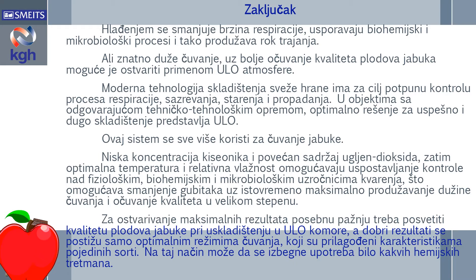Moderna tehnologija skladištenja sveže hrane ima za cilj potpunu kontrolu procesa respiracije, zatim sazrevanja, pa starenja i propadanja. U objektima sa odgovarajućom tehnološkom opremom, optimalno rešenje za uspešno i dugo skladištenje predstavlja upravo Ultra Low Oxygen atmosfera. Ovaj sistem sve više se koristi za čuvanje jabuke, naročito kada je ambicija duže čuvanje i izvoz. Niska koncentracija kiseonika i povećan sadržaj ugljen-dioksida, uz optimalnu temperaturu i relativnu vlažnost, omogućava uspostavljanje kontrole nad fiziološkim, biohemijskim i mikrobiološkim uzročnicima kvarenja, što omogućava smanjenje gubitaka uz istovremeno maksimalno produžavanje dužine čuvanja i očuvanje kvaliteta.